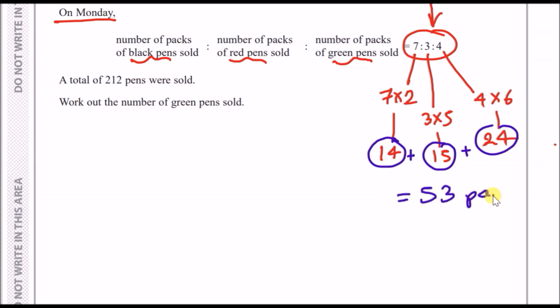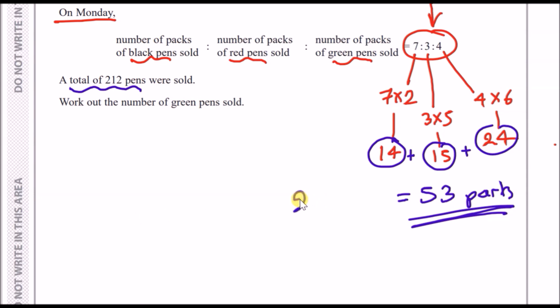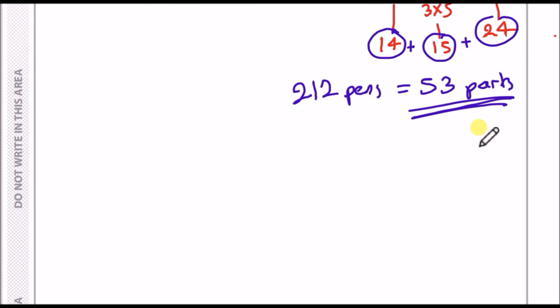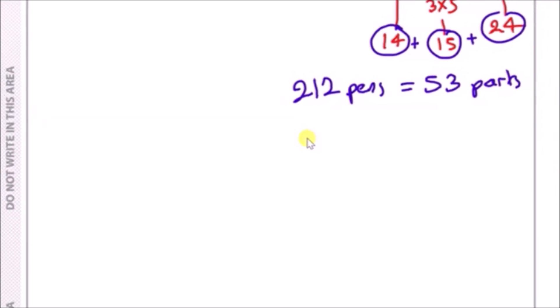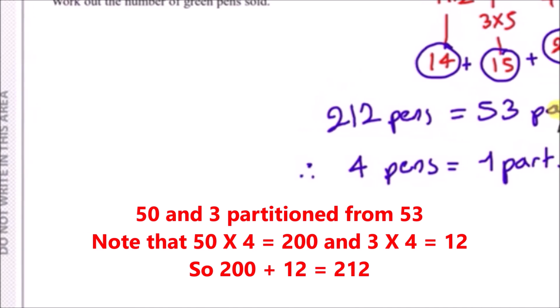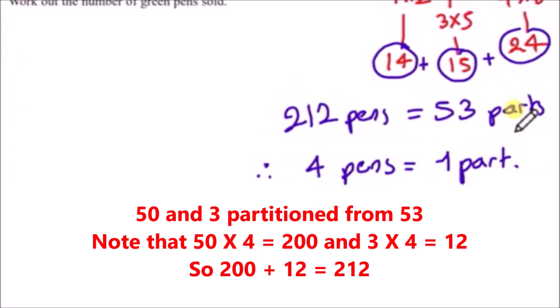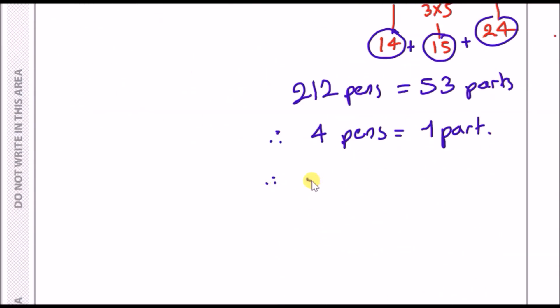A total of 212 pens were sold. Apparently these 53 parts now should equal 212 pens sold, and they want us to work out the number of green pens sold. So 212 pens equals 53 parts. For any type of ratio, always find one part. Divide the first number by 53, and this goes into exactly 4 times. To find the number of green pens, we know there were 24 green pens sold, so 24 × 4 gives us 96 pens actually sold.